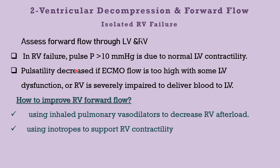How can we assess forward flow in patients with isolated RV failure? It is easy to maintain pulse pressure more than 10 mmHg as there is normal contractility in the left ventricle. Pulsatility can be decreased if ECMO flow is high, if there is some LV dysfunction, or if RV is severely impaired to deliver blood to the left ventricle. To improve forward flow from the right ventricle, we can use inhaled pulmonary vasodilators to decrease RV afterload — using prostaglandin analogues or nitric oxide — and inotropes to support RV contractility, such as milrinone and dobutamine.